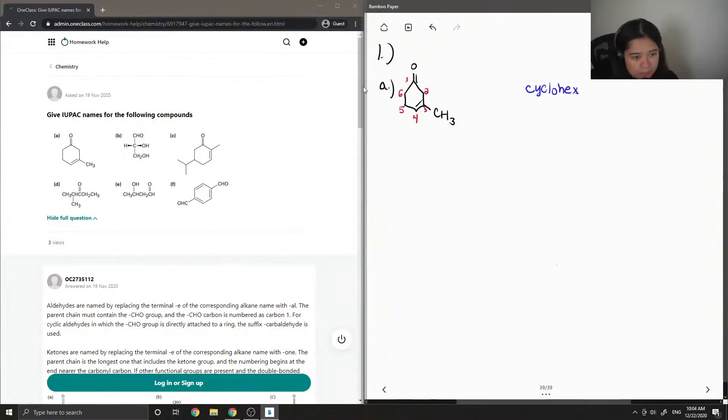First I'll note the methyl group on carbon 3, so the prefix I'll write 3-methyl. 3-methyl cyclohex. And then from here, I'll show where my double bond is. It's also on carbon 3, so I'll write 3-en.